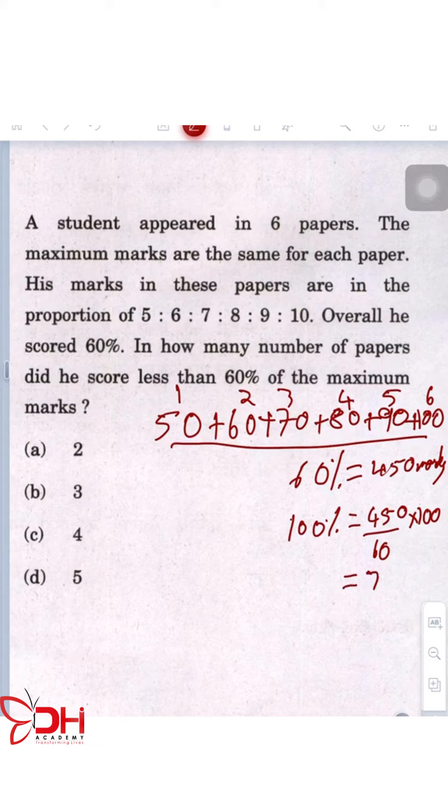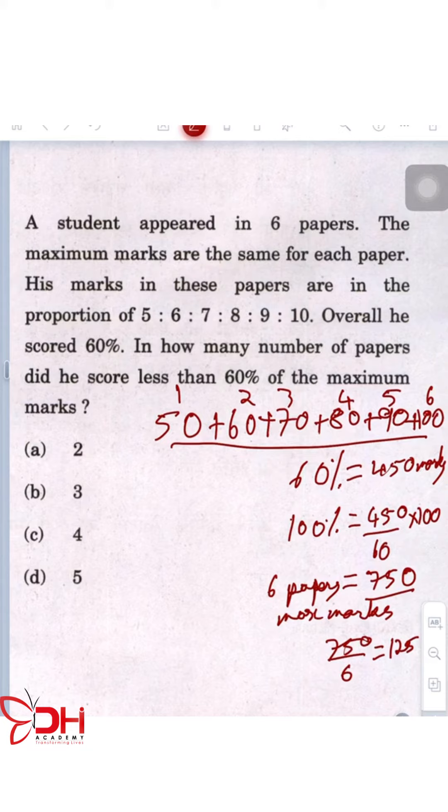What is the 750? The maximum marks of six papers, right? This is the maximum marks. Now we have this value 750, which is the maximum marks of six papers. So how much will it be for one paper? It is going to be 750 divided by 6, which will give you 125. Each paper's maximum mark is 125 marks.